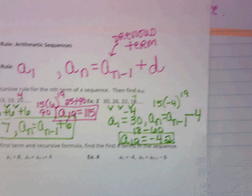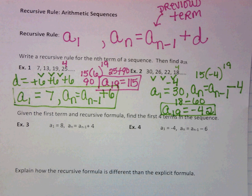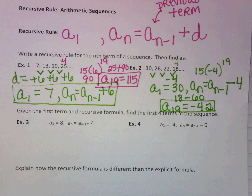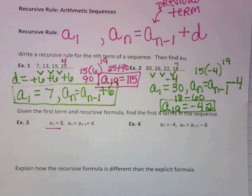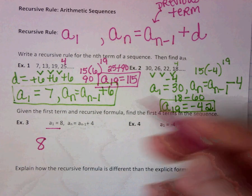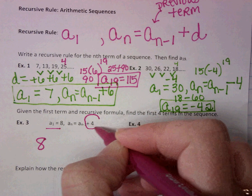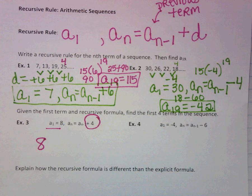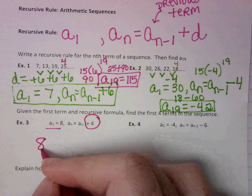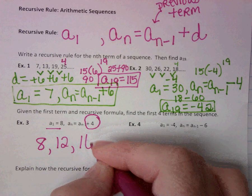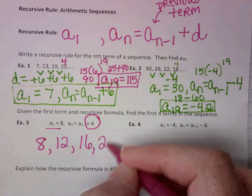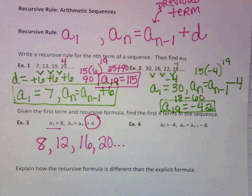Let's look at the next one. Given the first term and recursive formula, find the first four terms in the sequence. The first term is 8. We should notice that the common difference is plus 4. So if the first term is 8, we add 4 and we get 12. We add another 4, we get 16. We add 4, we get 20. And there's the first four terms of the sequence.